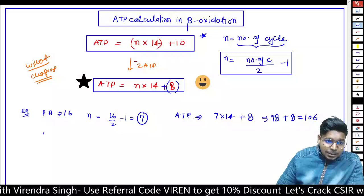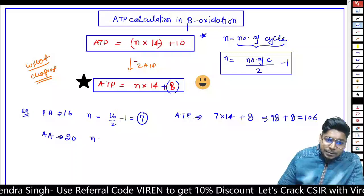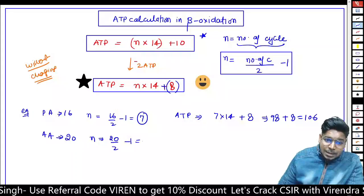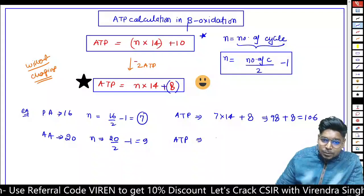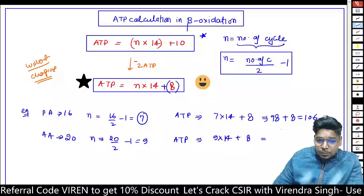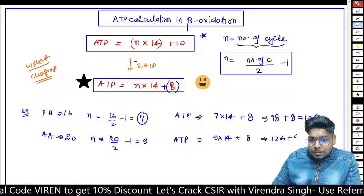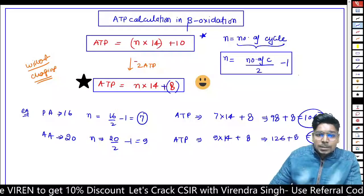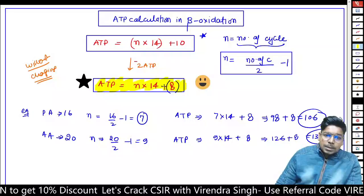If we talk about eicosanoic acid, that is 20 carbons. N = 20 by 2 minus 1, which is 9. ATP = 9 into 14 plus 8. Solve it: 126 plus 8 equals 134. You can get it very easily.